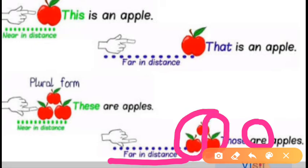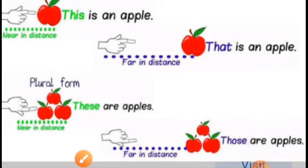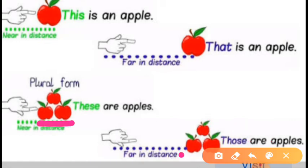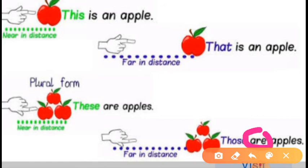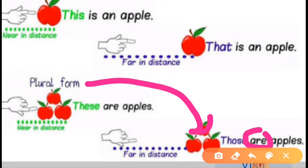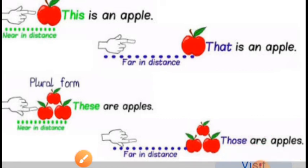So those: if it is far from the speaker — far in distance — followed by 'are,' this is the helping verb, and it is for the plural form. Clear? Let us take some more examples.